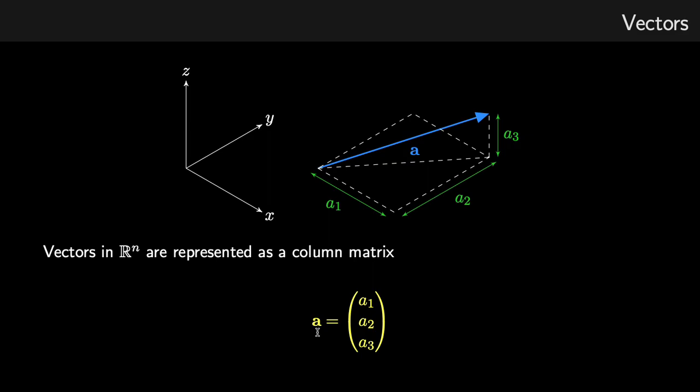So a vector can be represented as a column matrix. Now we could also represent it as a row matrix, but in my notes I typically use column matrix just to differentiate or distinguish a vector from an n-tuple. So here we have the vector A, with three values, these are real numbers A1, A2, A3, and these represent the distance along the x, y, and z-axis from the tail of the vector to the head.